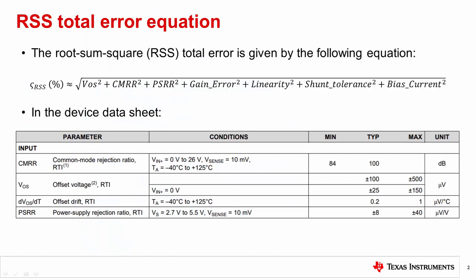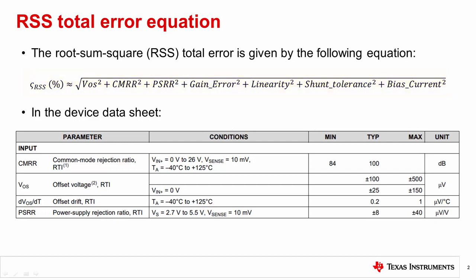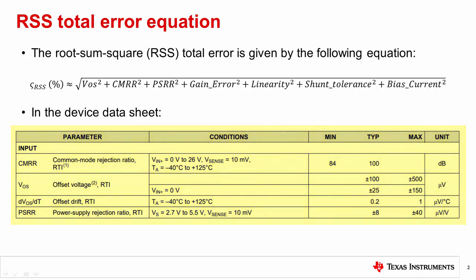In previous videos we introduced the Root Sum of Squares, or RSS, Total Error Equation for Current Sense Amplifier circuits, as shown here. Note that not all error terms may be shown. Most common error sources specified in typical datasheets include Input Offset Voltage (VOS), Common Mode Rejection Ratio (CMRR), and Power Supply Rejection Ratio (PSRR). These errors are given in the Electrical Characteristics Table of a device datasheet, as shown here. The rest of this video will focus on PSRR.